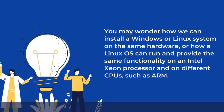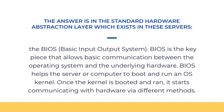You may wonder how we can install a Windows or Linux system on the same hardware, or how a Linux OS can run and provide the same functionality on an Intel Xeon processor and on different CPUs, such as ARM. The answer is in the standard hardware abstraction layer, which exists in these servers.